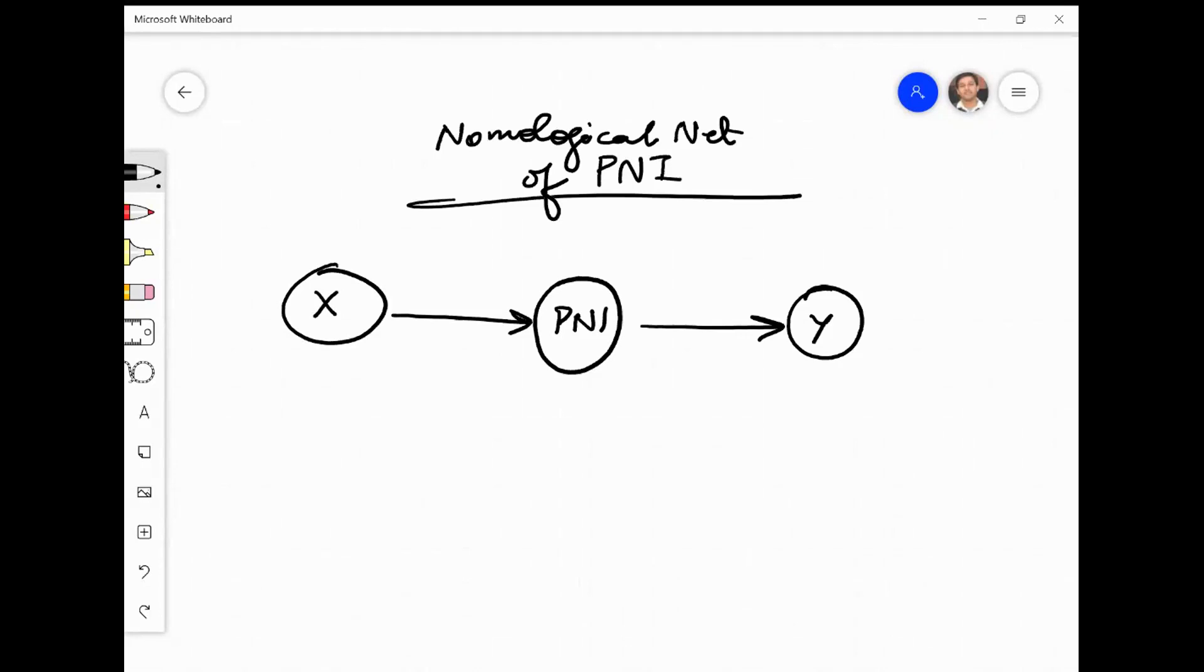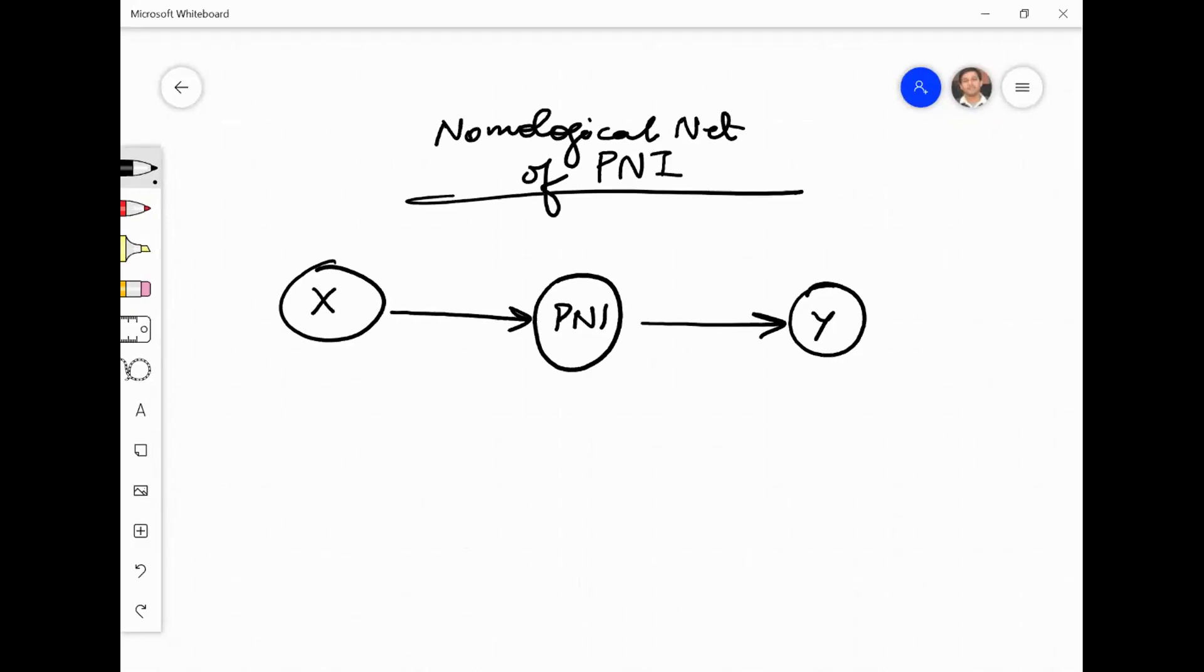It talks about antecedent and a consequent. Now there are different papers. Some papers I have seen, they test only this part, and they say that the antecedent to outcome, this is a nomological testing. Some papers test only this part and still they call this as nomological validity test.